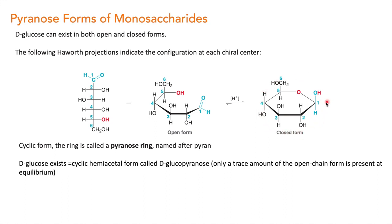This closed form is called a pyranose ring. It is called a pyranose ring because the pyran ring contains a six-membered cyclic structure with one oxygen in its ring. D-glucose can exist in both cyclic form and open chain form, but the majority of the product exists in cyclic form. At equilibrium, only a very small trace amount of open chain form is present, so mostly D-glucose exists in a closed ring structure.